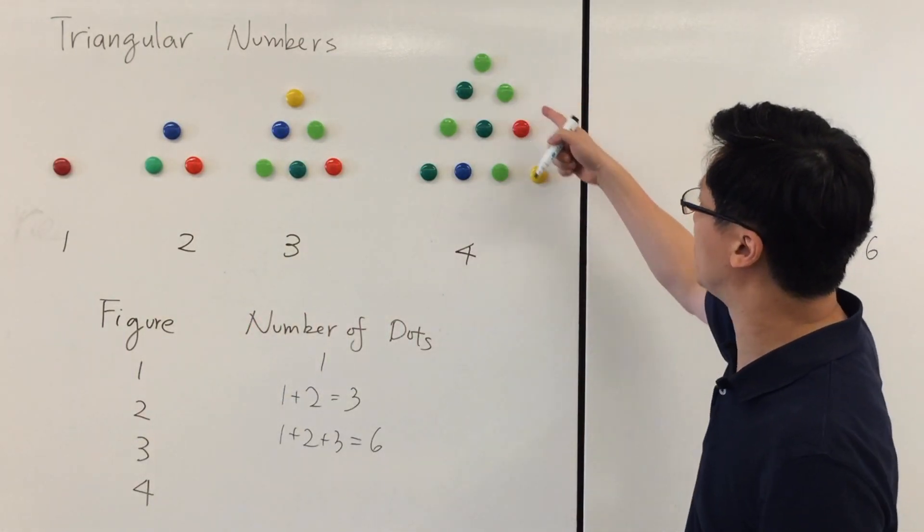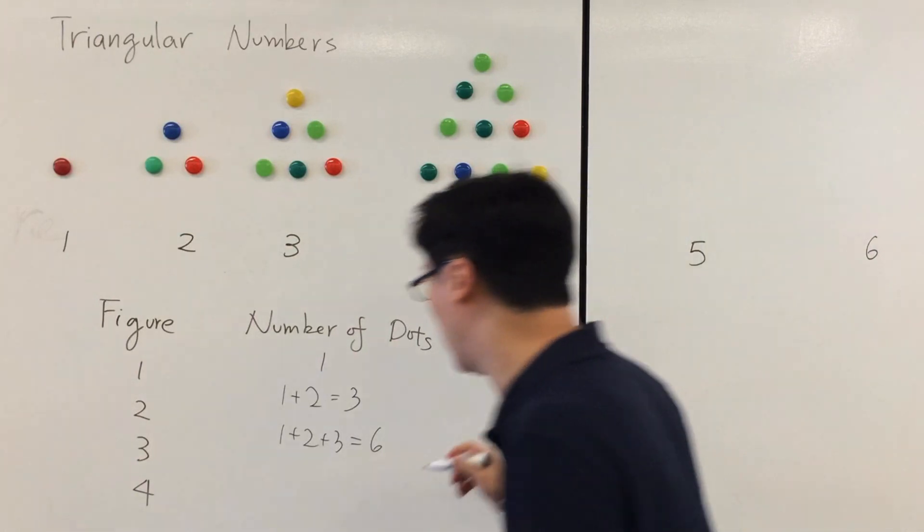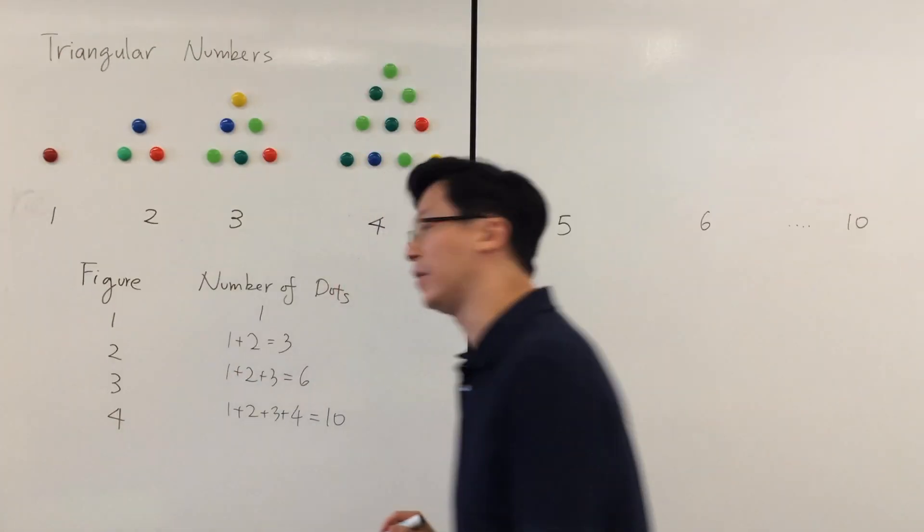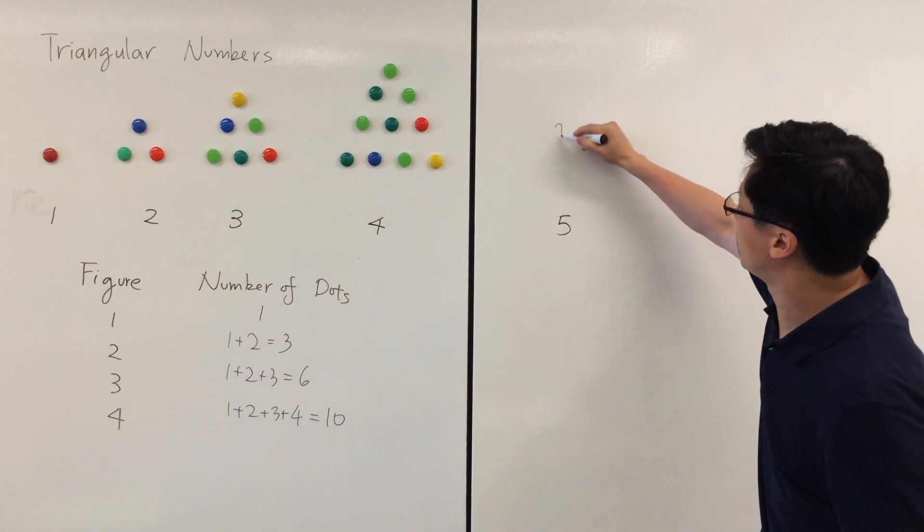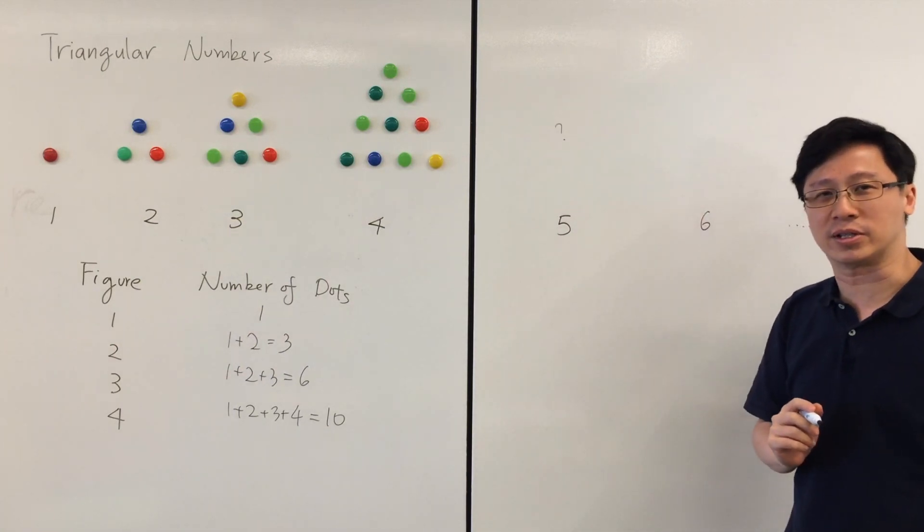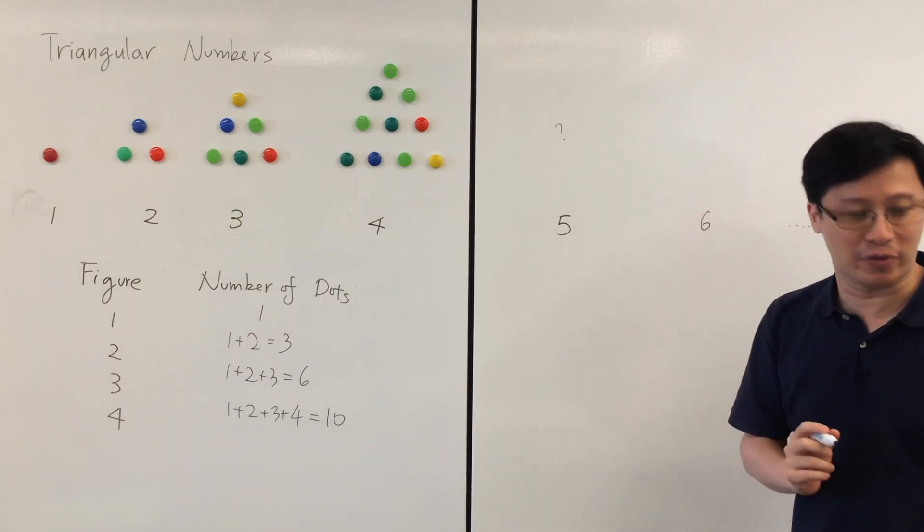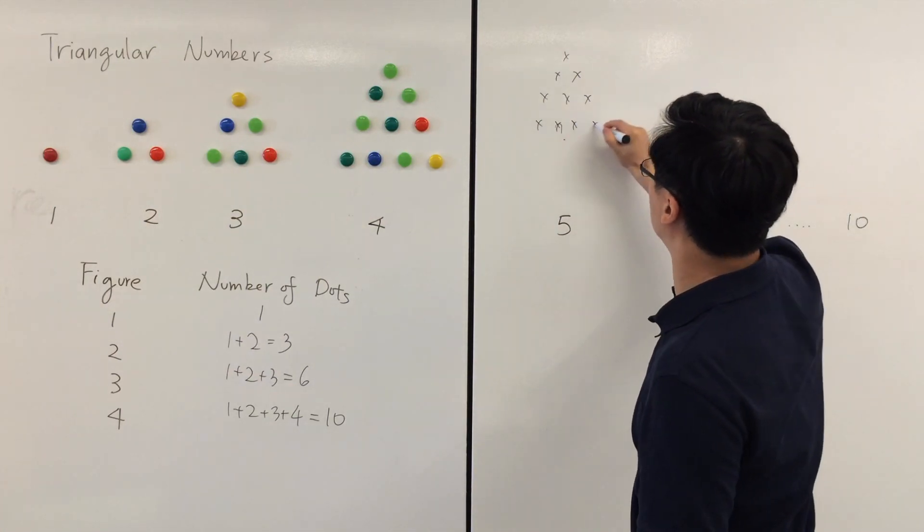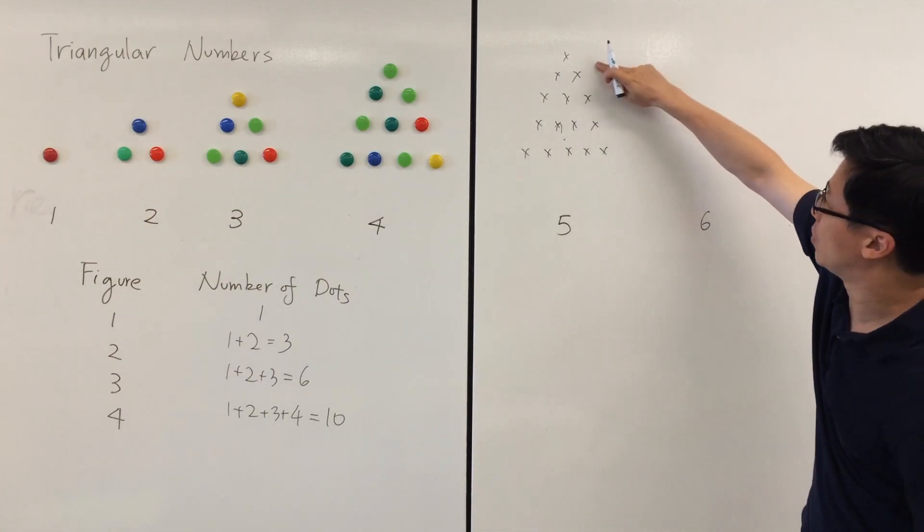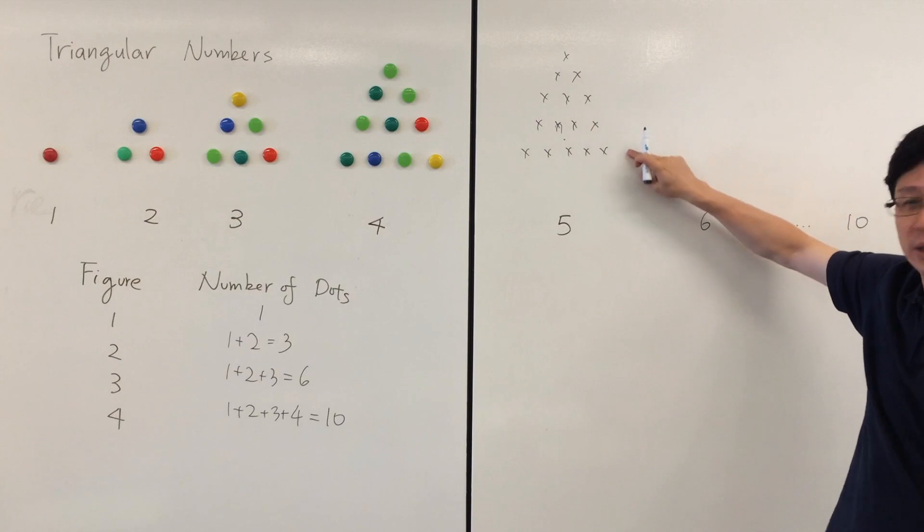For the fourth one, 1+2+3+4, giving a total of 10 dots. Can you find what is the number of dots in the fifth pattern? 1+2+3+4+5.